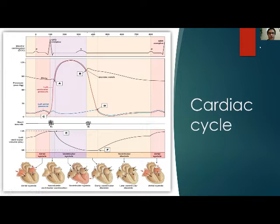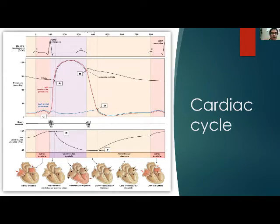This diagram summarizes all cardiac events and pressures. Above is the EKG — the P wave relates to atrial systole, and the QRS complex relates to ventricular depolarization and ventricular systole. The aortic pressure curve with the dicrotic notch, the left ventricular pressure curve, and the left atrial pressure in different parts of the cardiac cycle and heart sounds are all shown together.